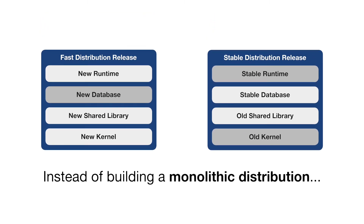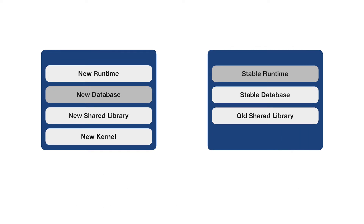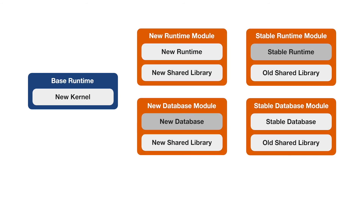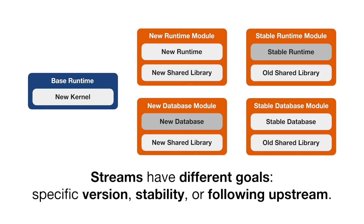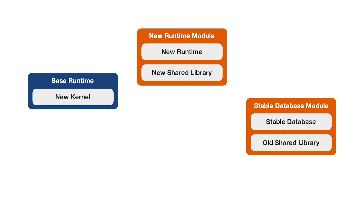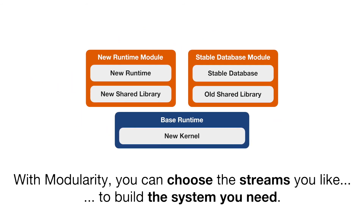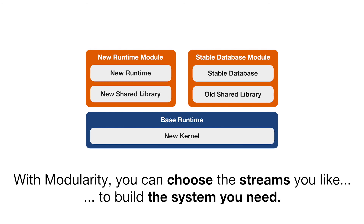Instead of building a monolithic distribution, modularity builds smaller components called modules with independent lifecycles and in multiple streams. Streams have different goals like specific version, stability, or following upstream. With modularity, you can choose the streams you like to build the system you need.